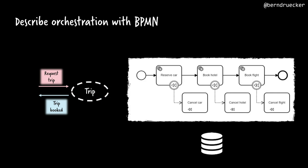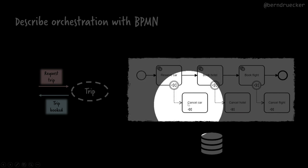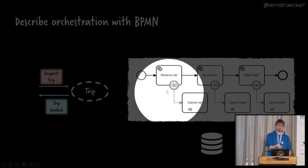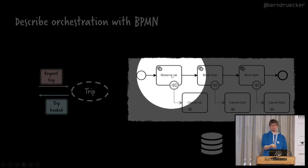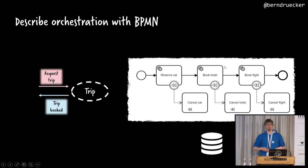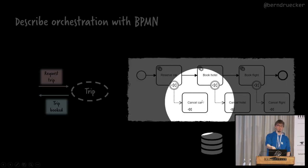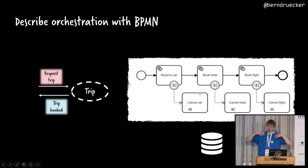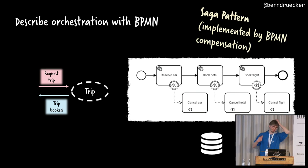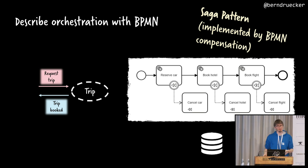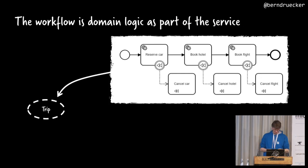Coming back to state machines, you can describe these kind of orchestrations with BPMN. The example I showed would look like this: reserve the car and directly define the compensating undo activity with it. The workflow engine keeps track of whether I already executed it, and if later on I have to roll back, it automatically executes the undo functionality again — stateful. That would be the saga pattern implemented with a BPMN engine, which I personally like.